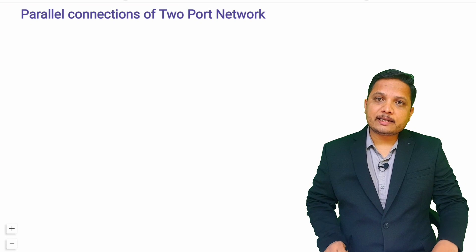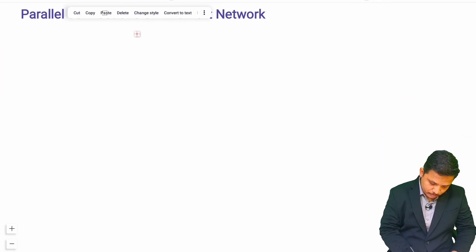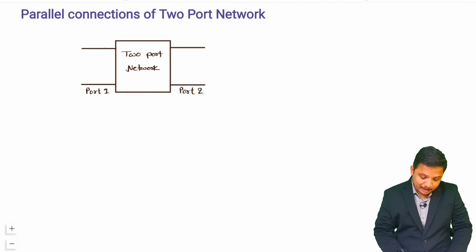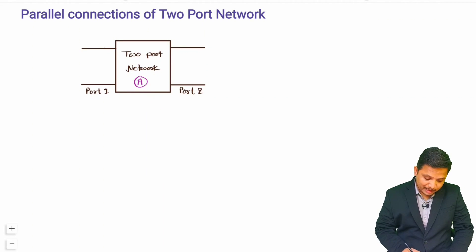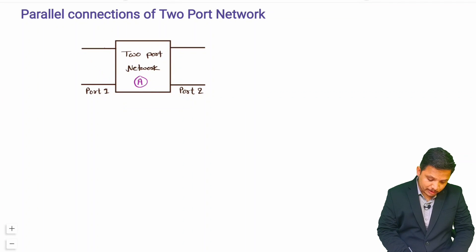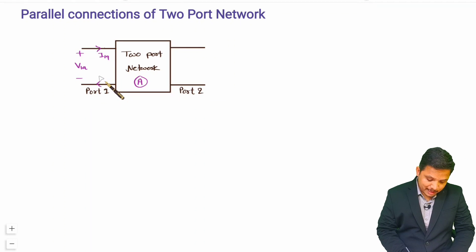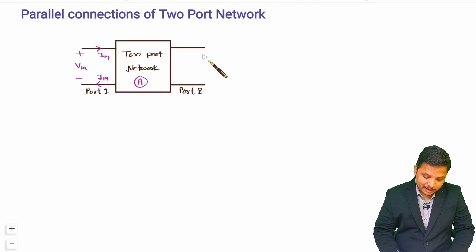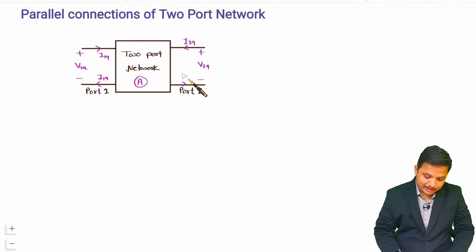Let me consider the first two-port network. This is two-port network A. At port 1, the voltage is V1A, the current going inside is I1A, and the current coming out is also I1A. At port 2 of two-port network A, the voltage is V2A, the current going inside is I2A, and the current coming out is I2A.